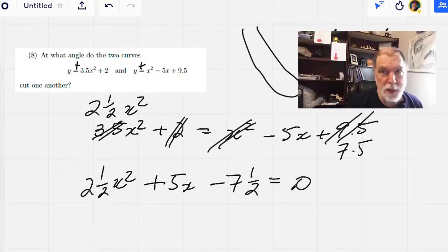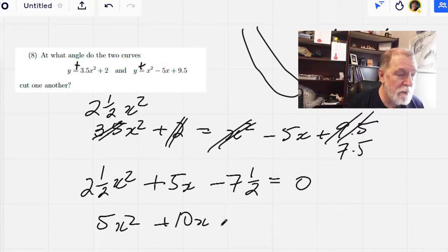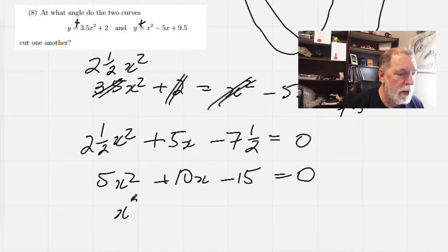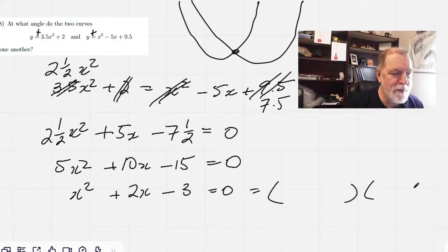So we've got 2.5x squared plus 5x minus 7.5 equals zero. So let's find out the x's that will make this zero. Let's first get rid of these halves. So we'll double everything. So we've got 5x squared plus 10x minus 15 equals zero. And then we're going to divide everything by five.